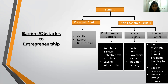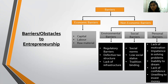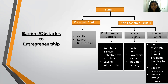Now let's look at the non-economic barriers. The first category is environmental barriers. The first environmental barrier is regulatory barriers. In order to start an enterprise, various rules and regulations of the government have to be complied with. If these rules are strict, time-consuming, and frustrating, people will be discouraged from entering into entrepreneurship.